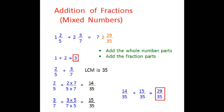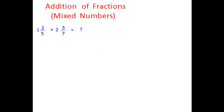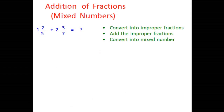There is another method to add these mixed numbers. The one we just saw involves adding the whole number parts and adding the fraction parts. Now let's take the same example and see the other method. We know that mixed numbers can be converted to improper fractions. So we convert them to improper fractions, add the fractions, and then convert the result back to a mixed number.